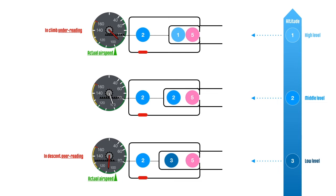But the static pressure inside the diaphragm increases from 2 to 3. Consequently, the difference between total pressure in the diaphragm and static pressure in the case is higher. Thus the airspeed displayed is higher than the actual airspeed. So the instrument incorrectly over-reads in descent.